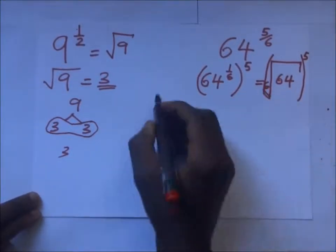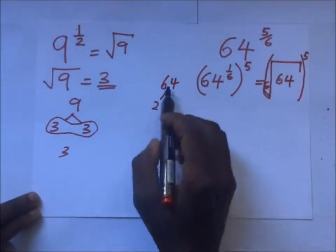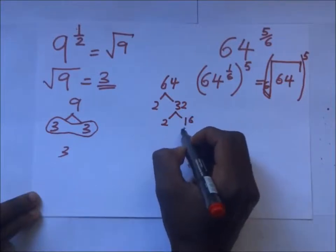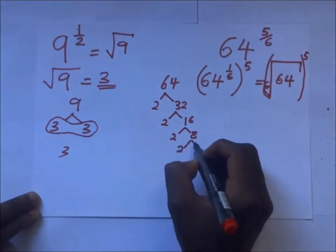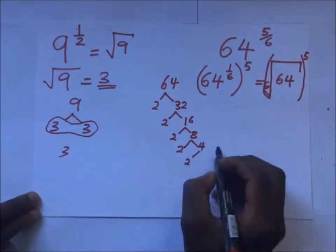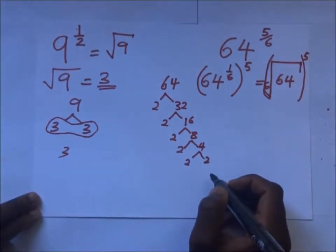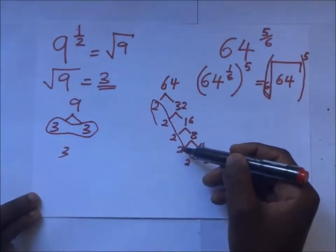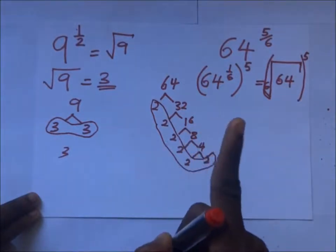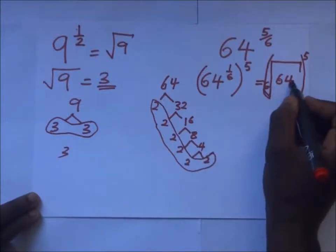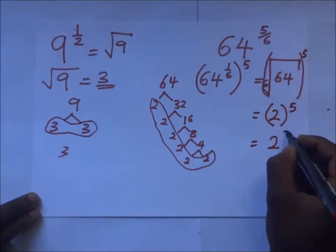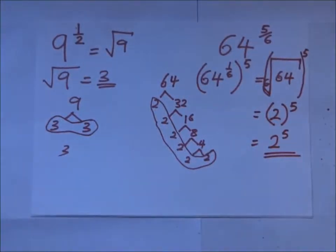To find the sixth root of 64, prime factorize it: 64 divided by 2 gives 32, by 2 gives 16, by 2 gives 8, by 2 gives 4, by 2 gives 2. Since we are looking for the sixth root, group the six 2s — that one group of 6 gives us one 2. So the sixth root of 64 is 2, and the answer is 2 to the power 5, which equals 32.